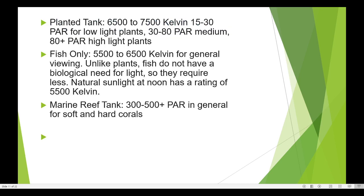For planted tanks, a color temperature of 6500 to 7500 Kelvin is recommended. Light intensity requirements are: 15 to 30 PAR for lower light plants, 30 to 80 PAR for medium light plants, and 80 plus PAR for high light plants. PAR stands for Photosynthetically Active Radiation, representing the wavelength of light within the visible range of 400 to 700 nanometers that drives photosynthesis.